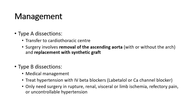For type B dissections, uncomplicated cases are best managed medically with good survival rates. First-line treatment is management of hypertension with intravenous beta blockers, such as labetalol, or calcium channel blockers as second-line therapy. The aim of this therapy is to rapidly lower the systolic pressure, pulse pressure, and pulse rate, to minimize stress on the dissection and limit further propagation.